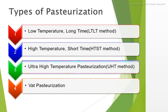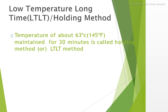The next method is Ultra High Temperature — UHT — pasteurization. Then there is the Low Temperature, Long Time method at about 63 degrees Celsius for 30 minutes, also called the holding method or LTLT method.